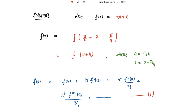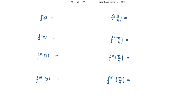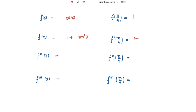We need to evaluate all four terms. The function is tan(x), and f(π/4) = tan(π/4) = 1. The first derivative of f(x) is d/dx[tan(x)] = sec²(x), which can be written as 1 + tan²(x). Therefore f'(π/4) = 1 + tan²(π/4) = 1 + 1 = 2.